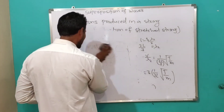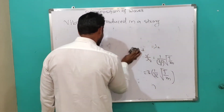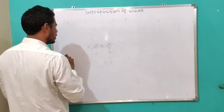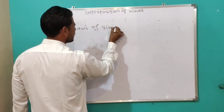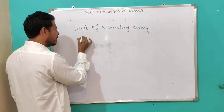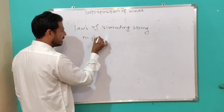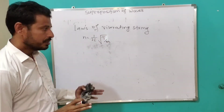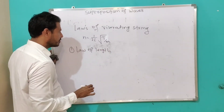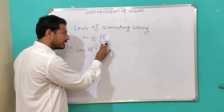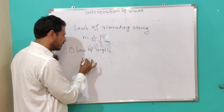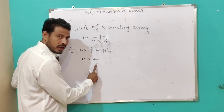There are three laws of a vibrating string. The fundamental frequency is n = (1/2L)√(T/m). From this formula we derive the laws. First law — Law of Length: if linear density m and tension T are constant, then the fundamental frequency n is inversely proportional to the length L of the vibrating string.